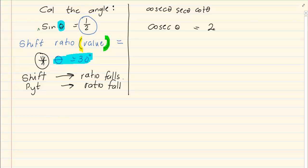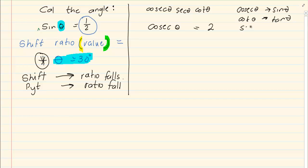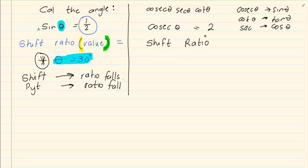You are going to press your ratio. Now remember, on the calculator there is only sin, cos, or tan. So when talking about a ratio linked to cosec, you must immediately link it: cosec links to sin, cot links to tan, and sec links to cos. So we press shift, we press the ratio — remembering that cosec links to sin, cot to tan, sec to cos.